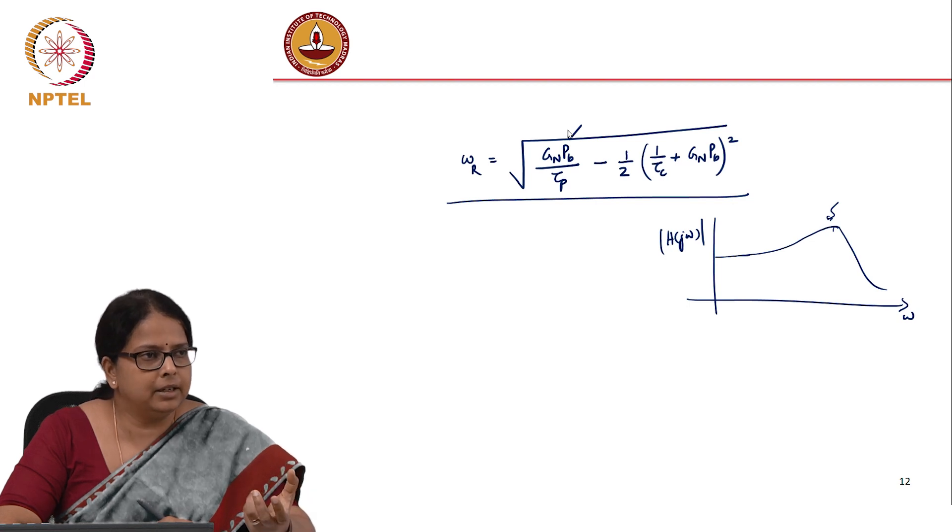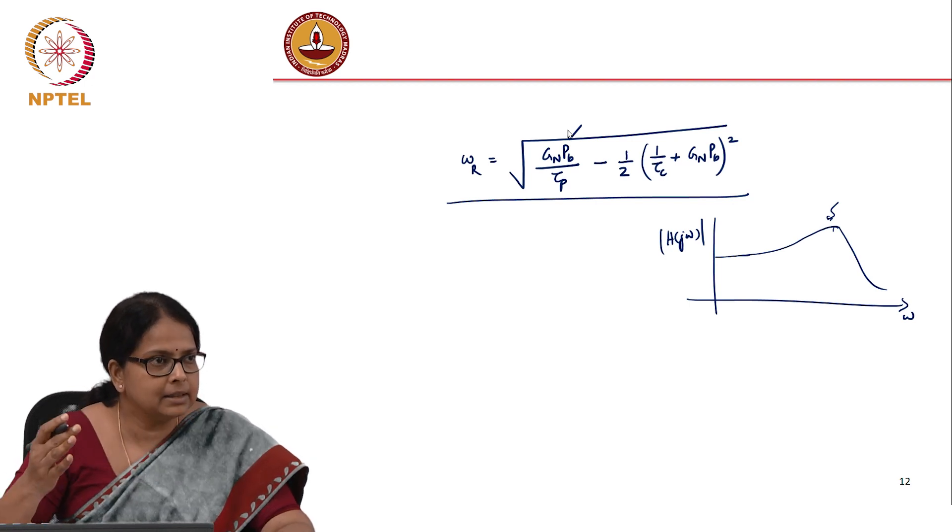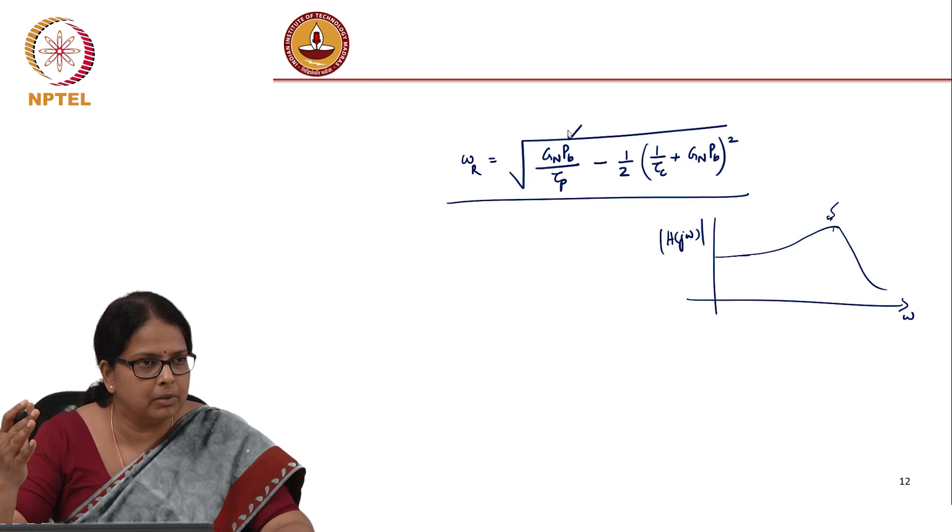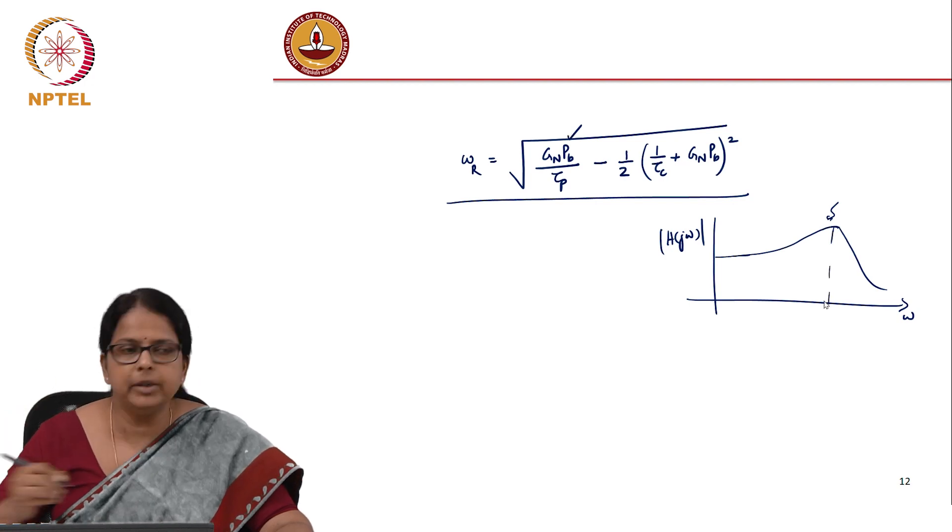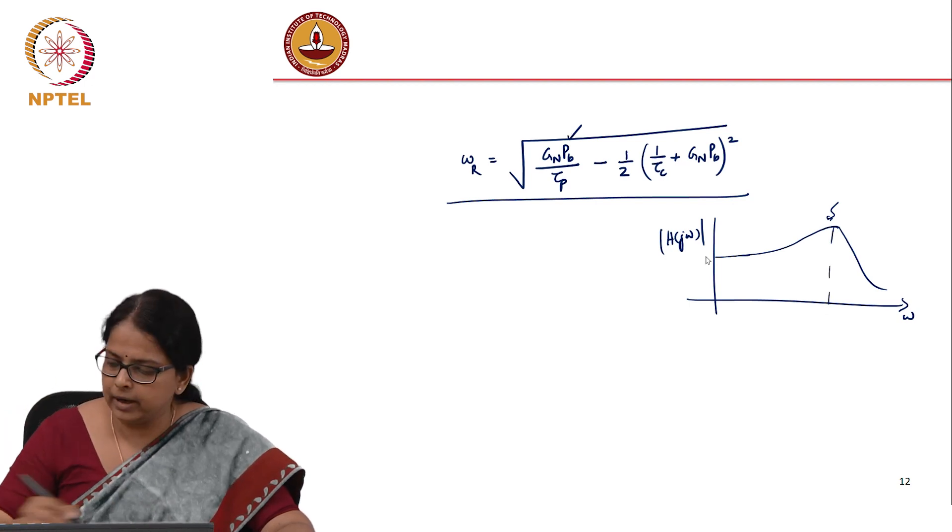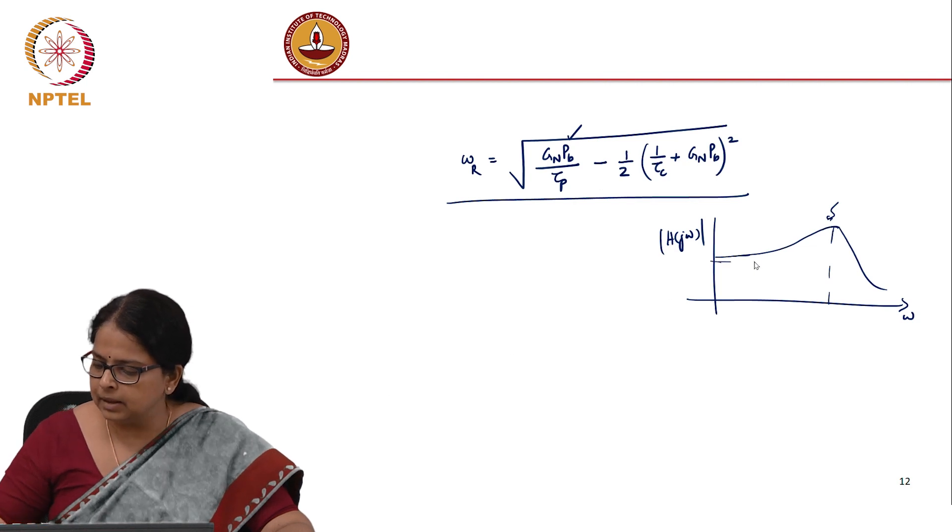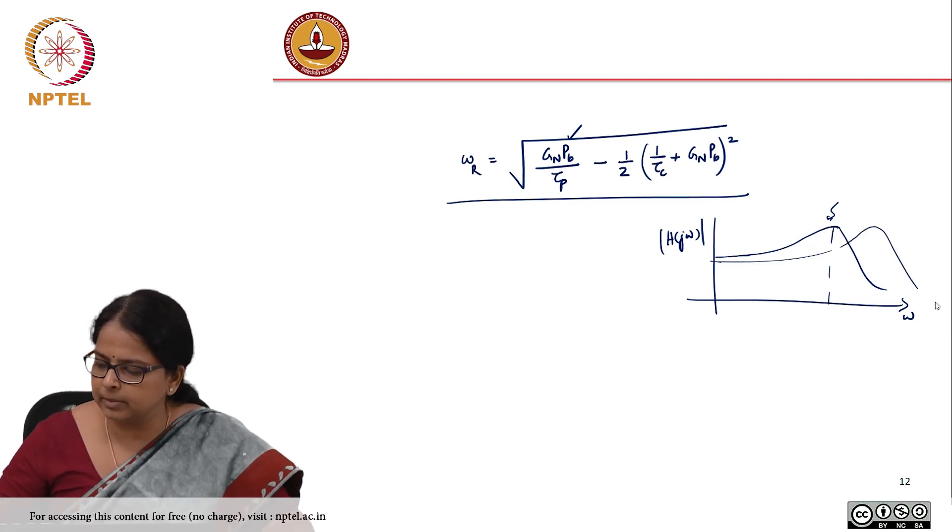And incidentally, this maximum is now dependent on your p_b. g_n is a material constant. Depending on the bias current, depending on the bias power, the resonant frequency is going to be different. You can put larger power and push your resonant frequency.